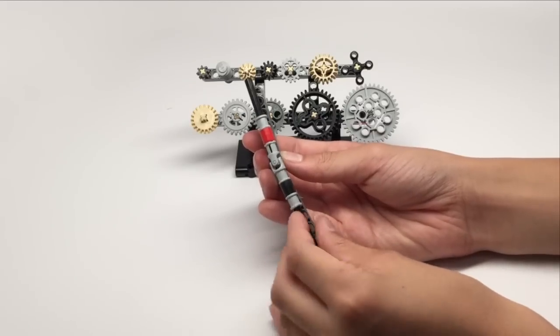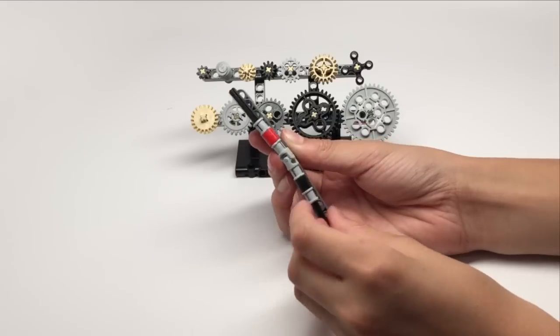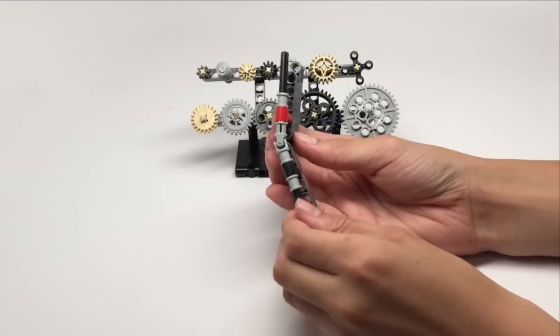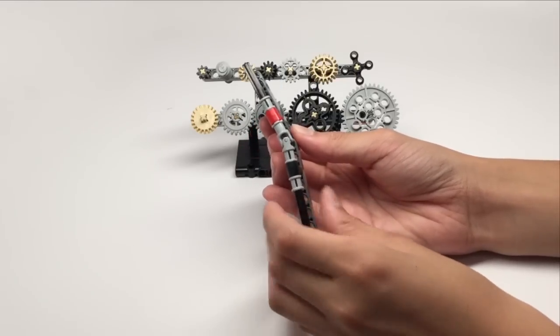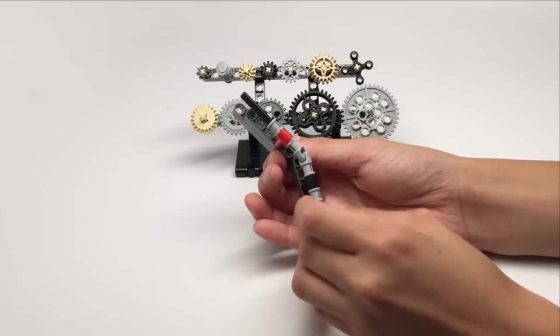But what's cool about it is it can spin in more than 90 degrees. In all these directions, it can spin and transfer motion. So you can use this whenever you have odd angles you want to transfer motion through.